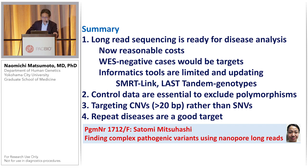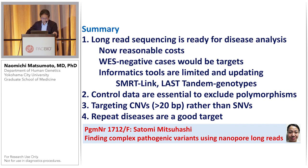This is a summary: long-read sequencing is ready for disease analysis, now at reasonable cost. Worst-negative cases would be good targets. Informatics tools are still limited but updating — for example, SMRT Link, LAST Tandem Genotype, and so on. Control data are essential to exclude polymorphic changes. Targeting copy number variations of 20 base pairs or more is a good target rather than SNVs, and repeat expansion diseases are a good target for this type of analysis.